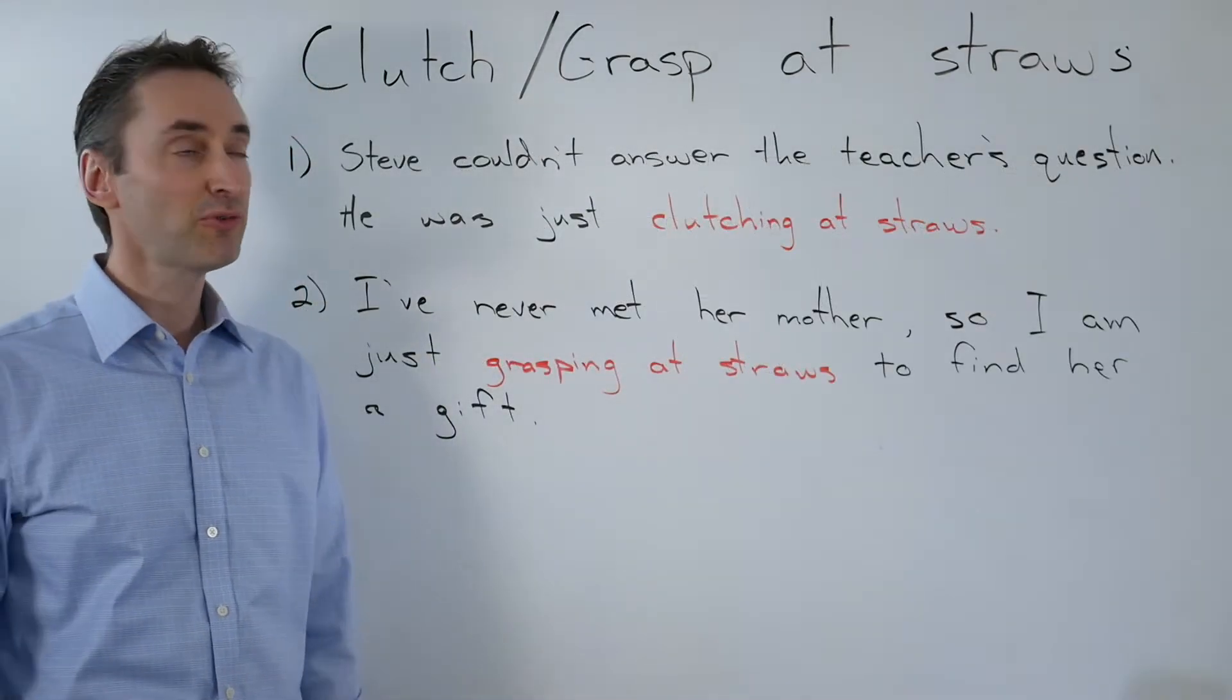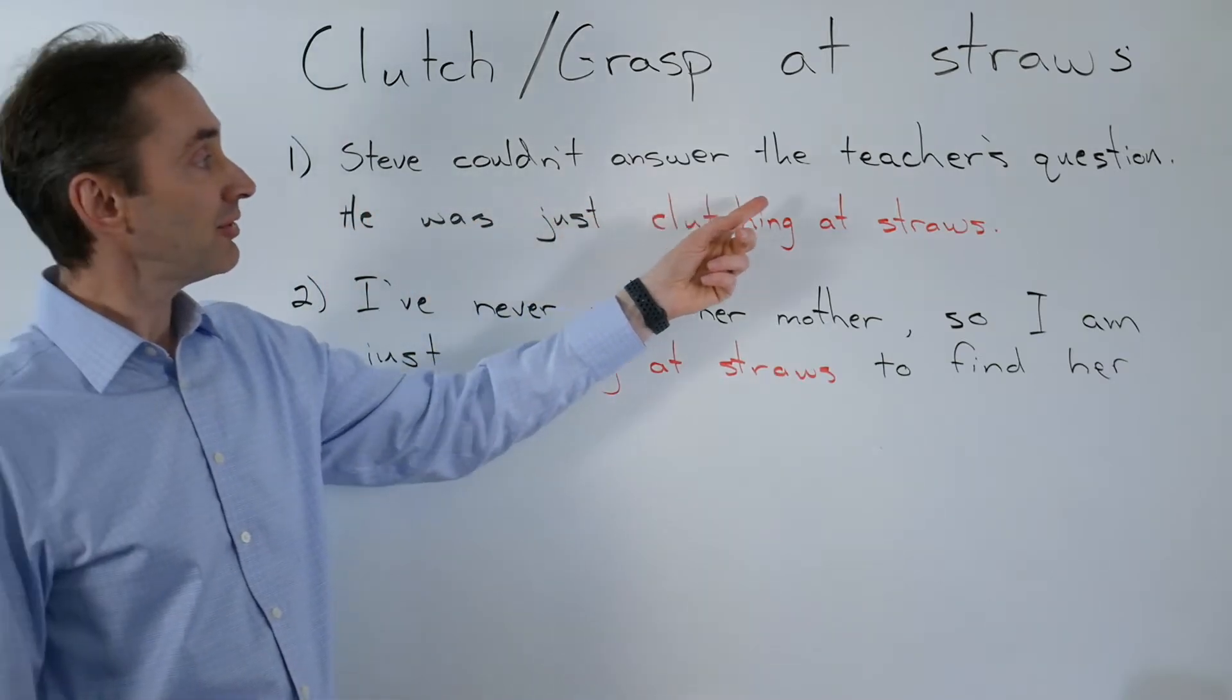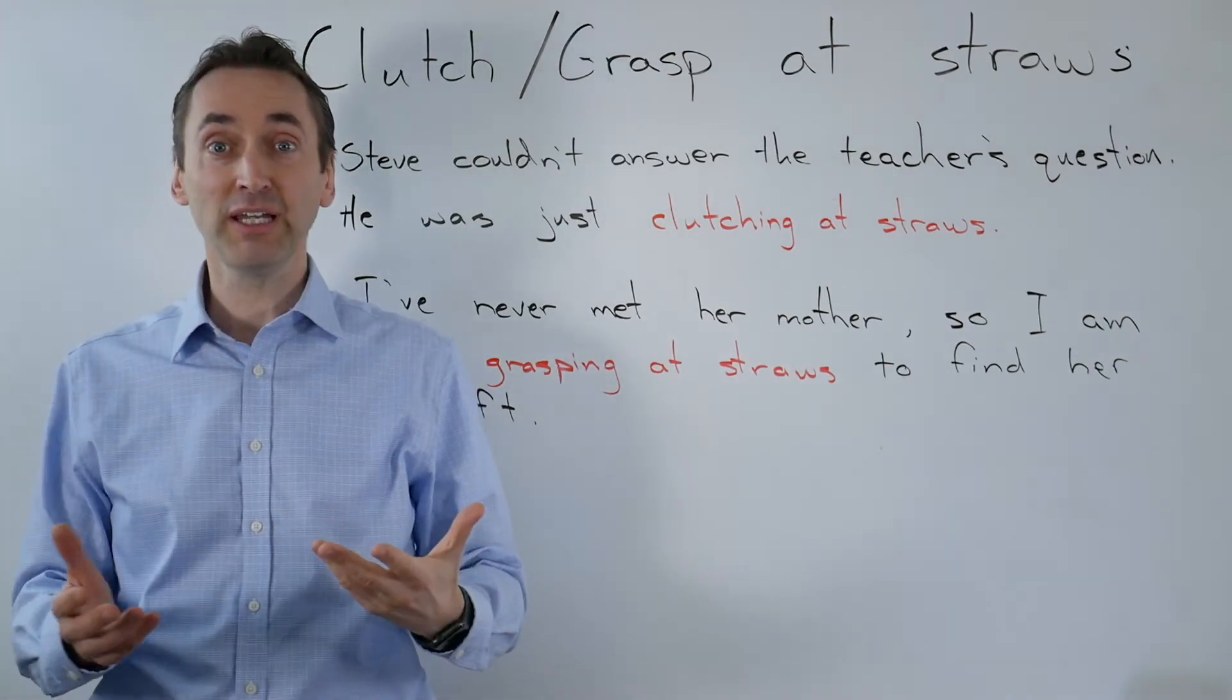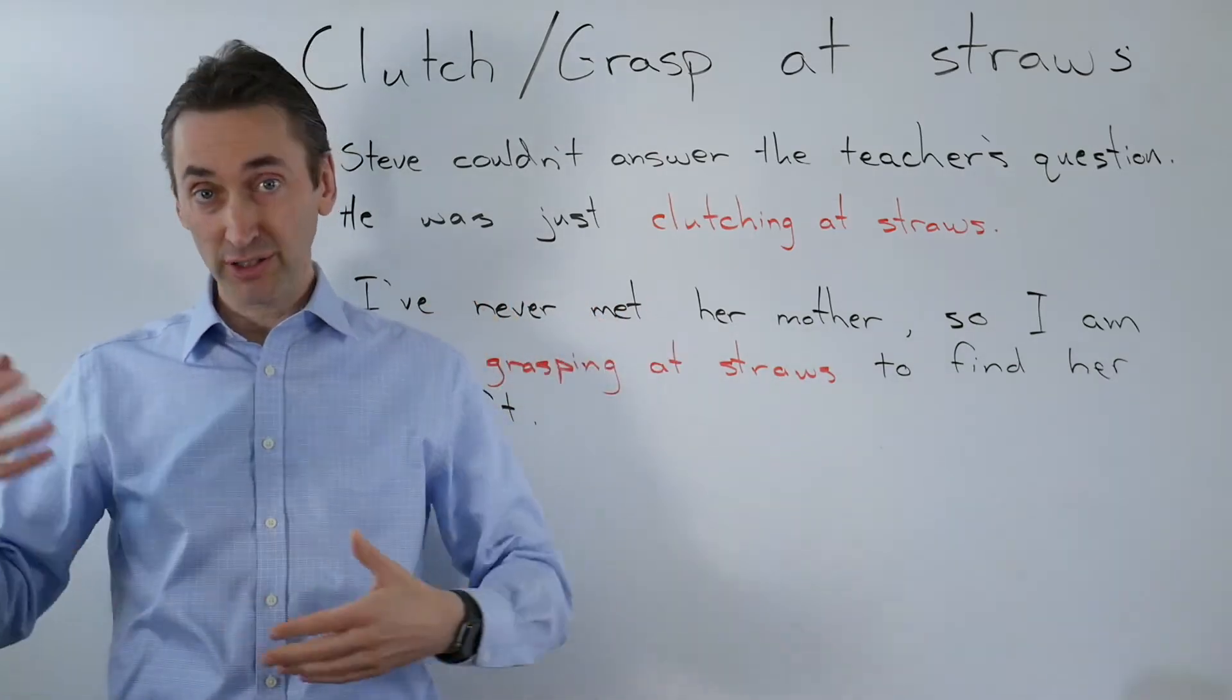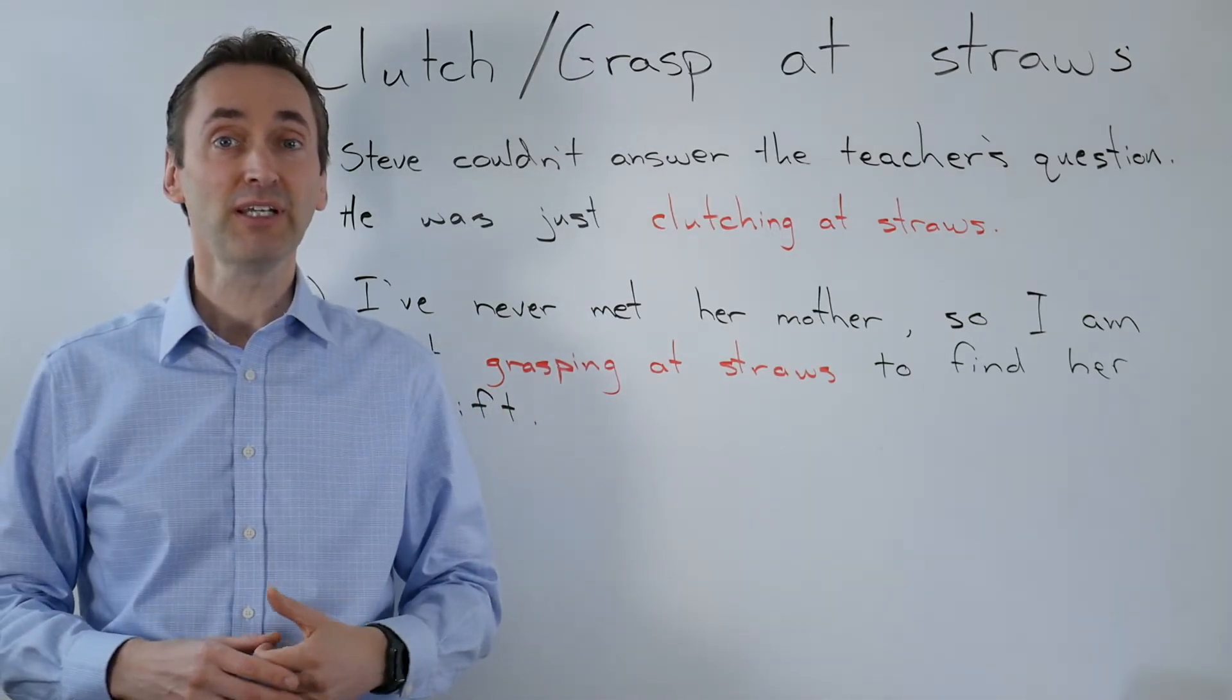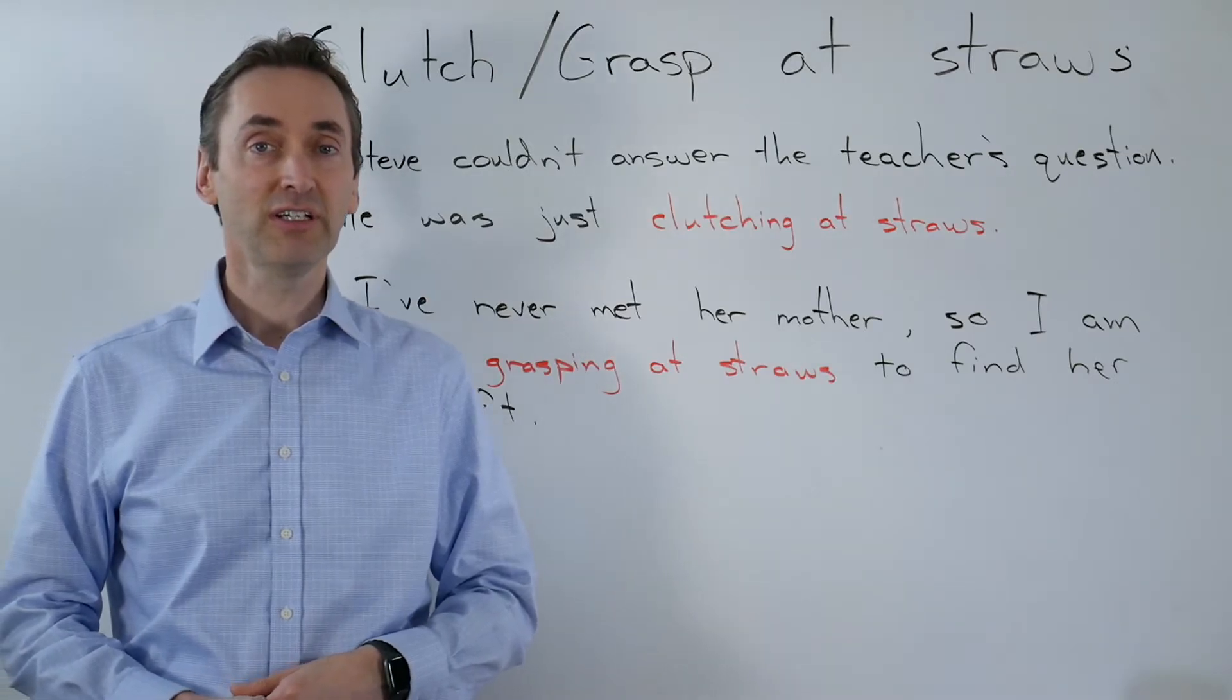Looking at some examples for clutch or grasp at straws. Steve couldn't answer the teacher's question. He was just clutching at straws. He has no idea what the answer is. He's desperately trying to find some way of getting the answer. He's trying all different types of things, but he has no idea. He's clutching at straws.